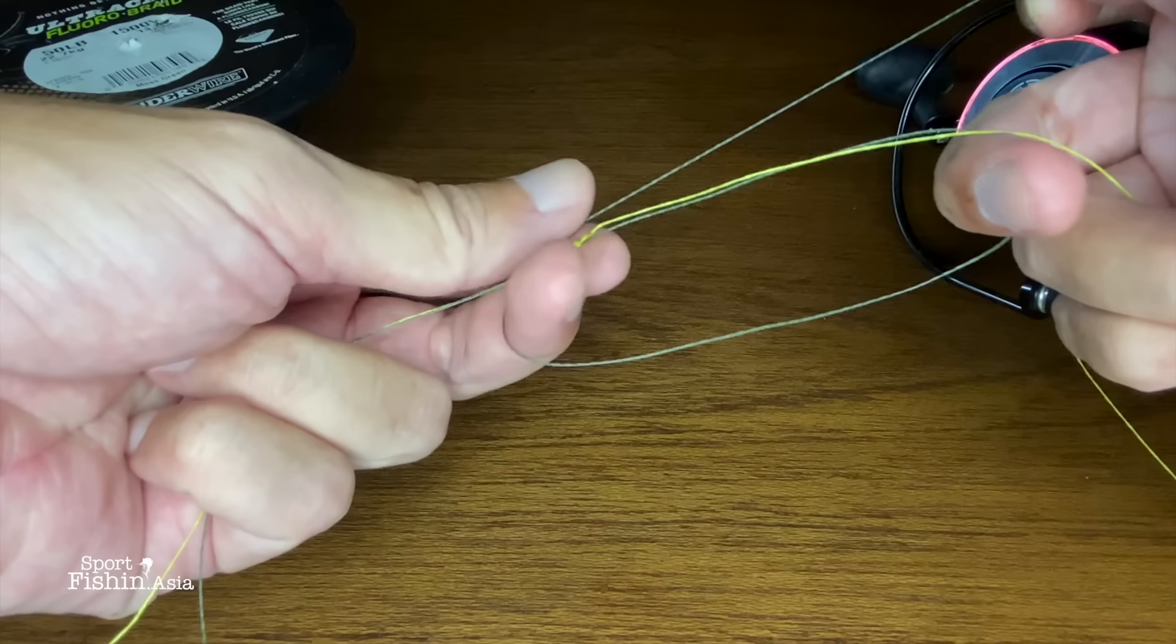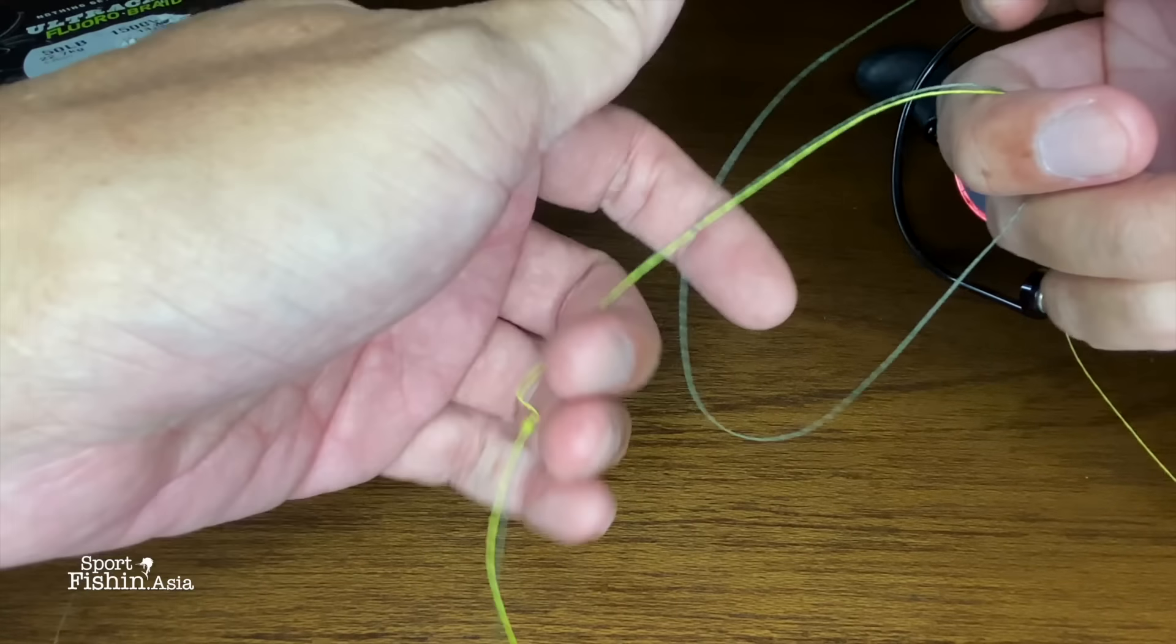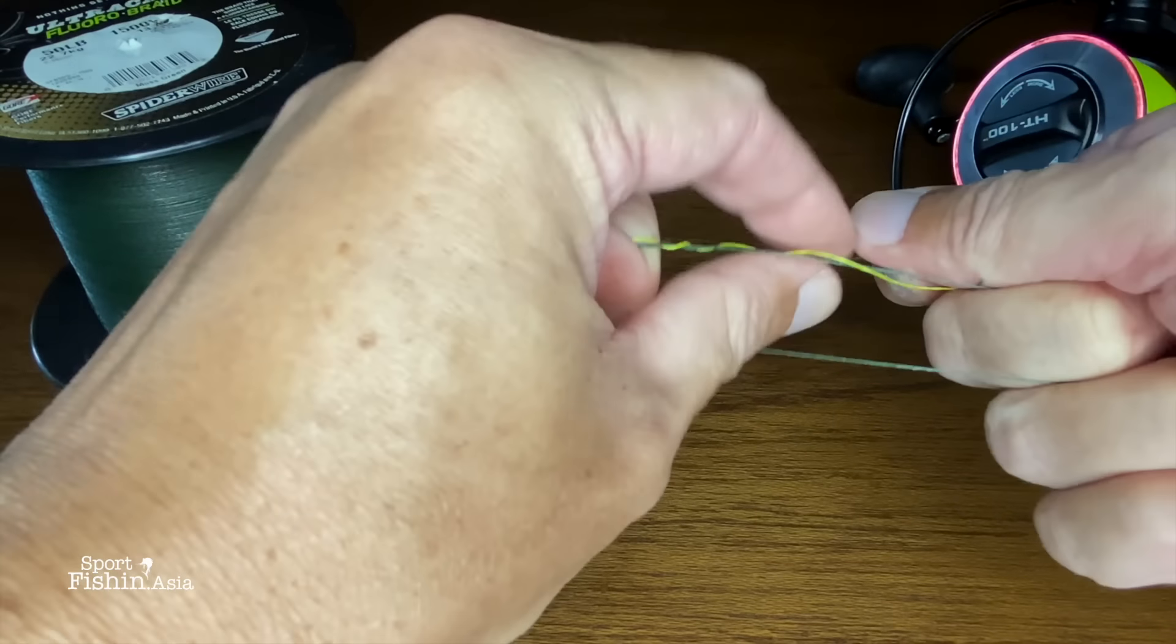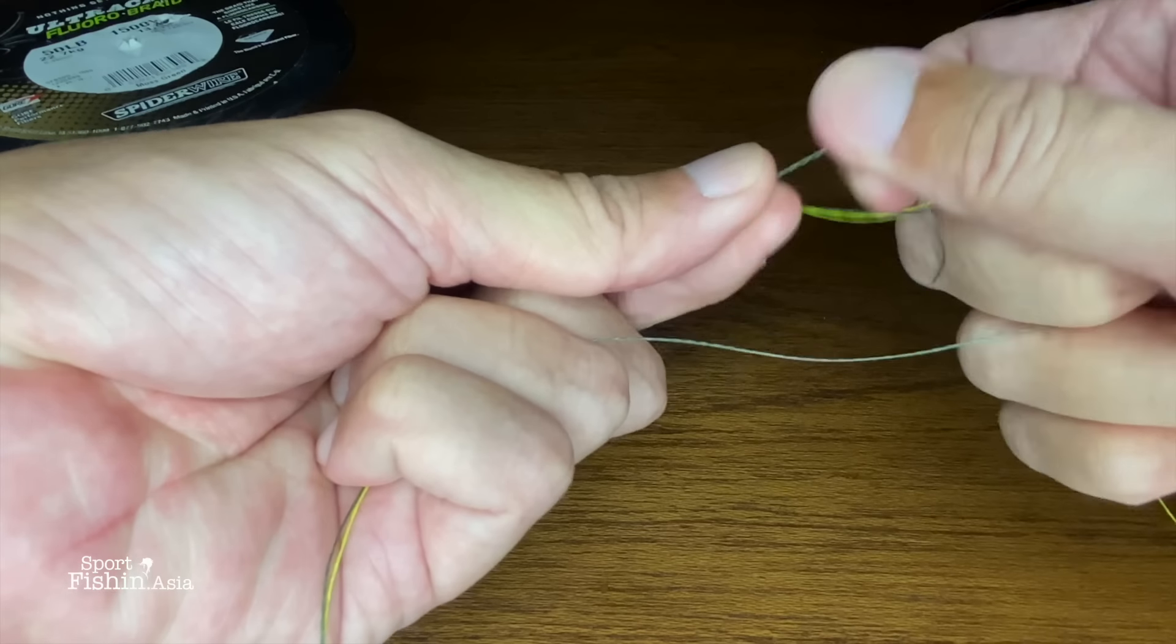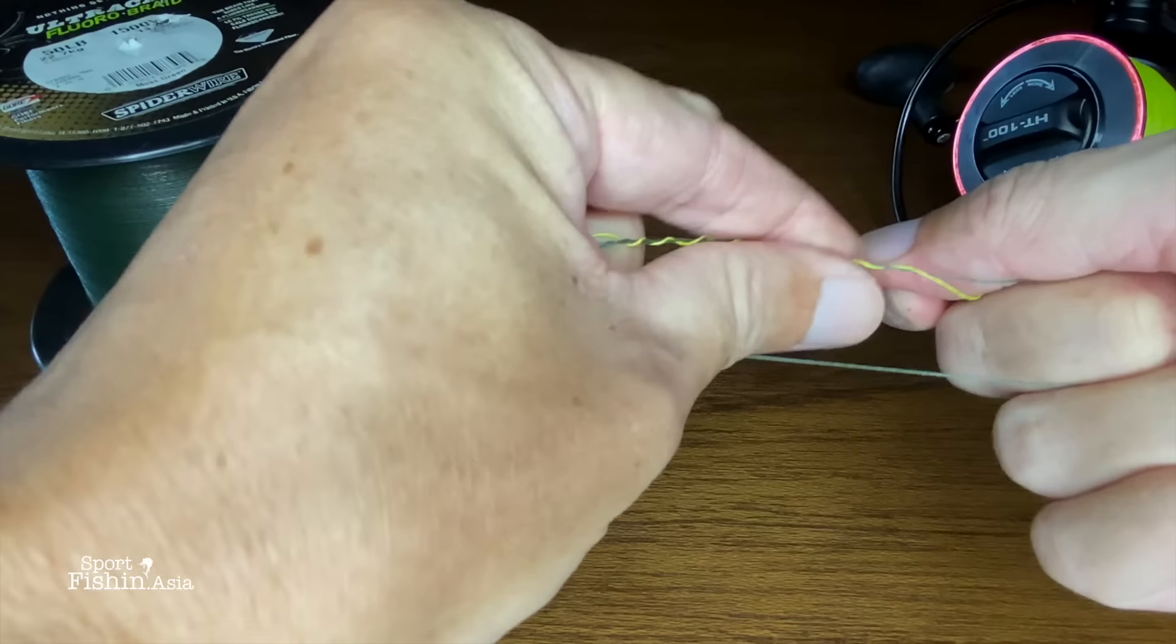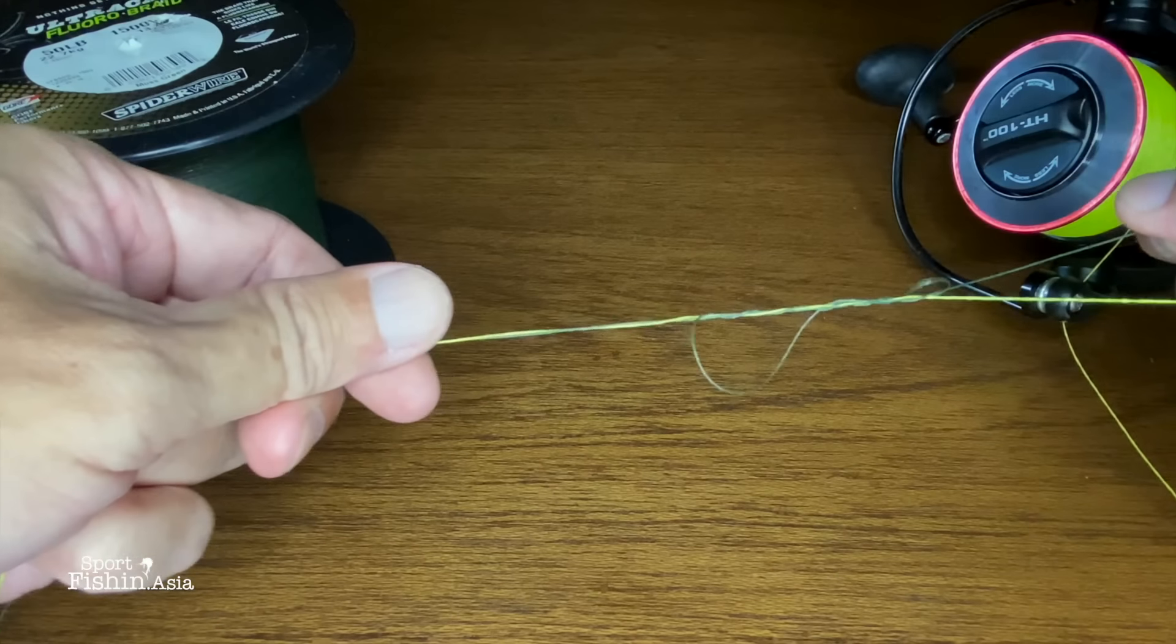If the line diameters are too different you can still use it, but when the diameter difference is too great, the thicker line will usually have less wraps and the thinner side will have a bit more wraps.